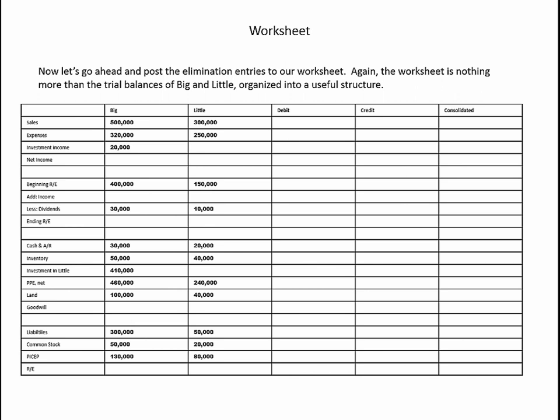Let's go ahead and post those elimination entries to our worksheet. Unfortunately, to make the entire worksheet fit in the slide I had to use a fairly small font — I apologize, but there's no two ways around it. The worksheet is nothing more than the trial balance of Big and the trial balance of Little organized into a useful framework. This is referred to as a three-part worksheet: the top four lines represent the income statement — sales, less expenses, plus investment income, equals net income. The next four lines are the statement of retained earnings. The remainder is the balance sheet. Due to space constraints, I combined all the expenses into a single line, so debits to cost of goods sold and depreciation expense will both post to that one line.